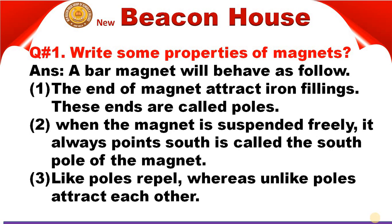Second property: when the magnet is suspended freely, it points south — this end is called the south pole of the magnet. If we suspend the magnet and leave it free, it will point in the south direction. The third and last property: like poles repel each other, whereas unlike poles attract each other.